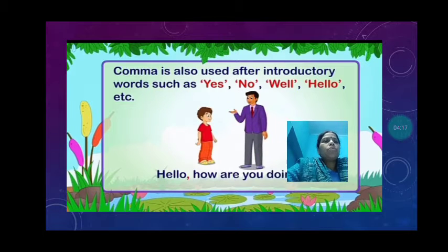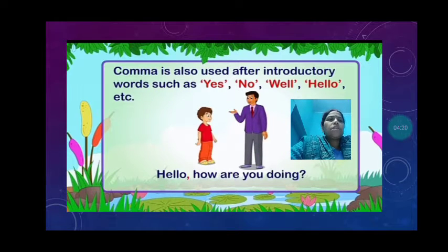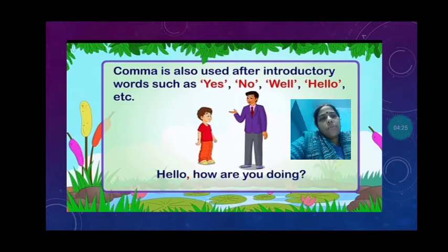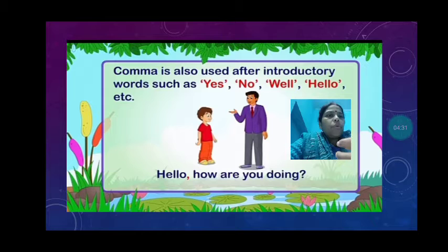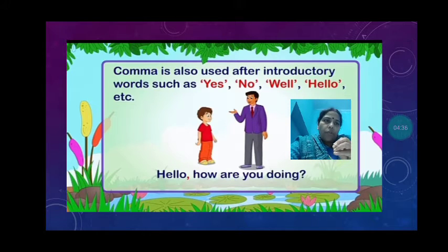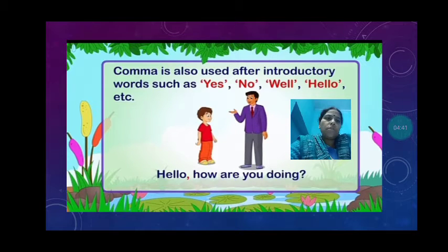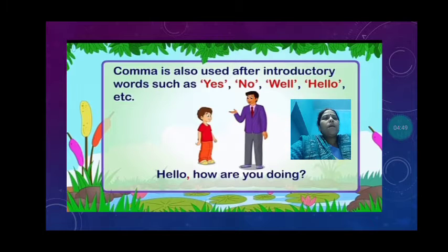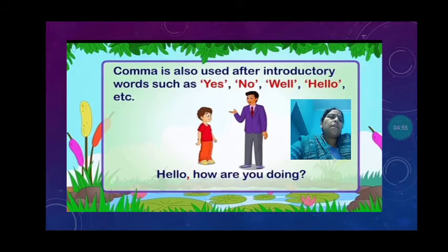A comma is used after introductory words such as yes, no, well, hello, etc. For example: 'Hello, how are you doing?' After 'hello,' there is a comma. Or after names: 'Raj, how are you doing?' — after 'Raj,' we put a comma and then a question mark. So you can see there is a comma after the introductory word or name.